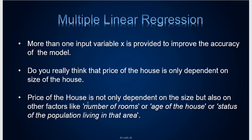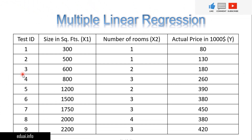The price of a house is not only dependent on the size, but it can also depend on factors like the number of rooms, the age of the house, or the status of the population living in that area. In simple words, we don't want to consider only one variable — we want more inputs so that we can improve the accuracy. That's what multiple linear regression is.